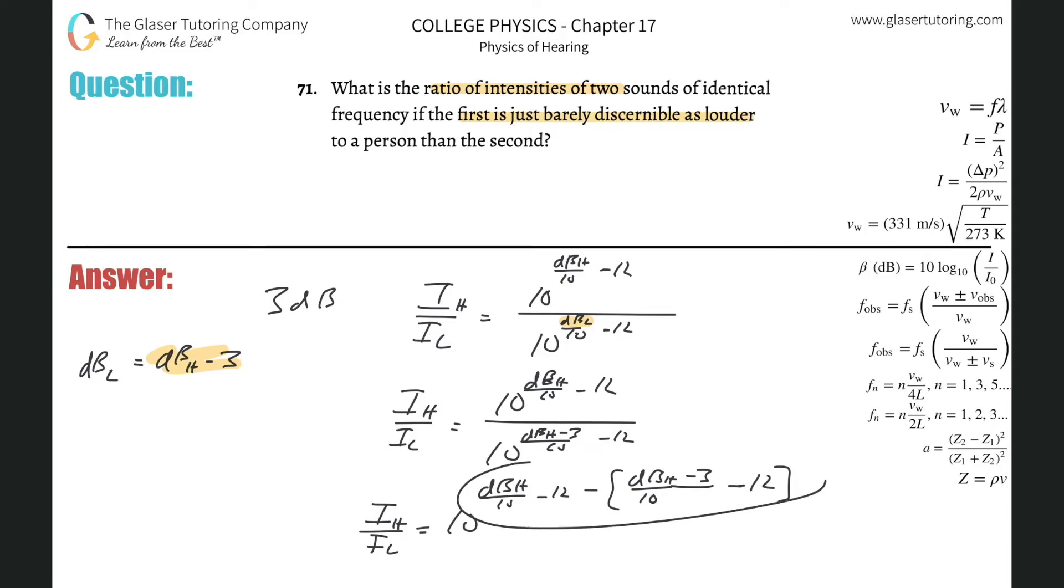So simplifying this on out, I'm going to do the work over on the left. If you notice, I can distribute the negative sign, so this would be dbh over 10 minus 12 minus now dbh minus 3 all over 10 plus then 12. Notice the 12s cancel. Now what I can do is put each of these over 10 by itself, so that would be dbh over 10 minus dbh over 10. Then this would be a double negative. So that would be plus then 3 over 10. Notice these would cancel, and that leaves me finally with just the value of ih over il is equal to now 10 raised to the 3 tenths.